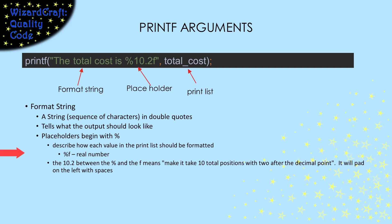Placeholders always start with a percent sign and end with a type specifier. In this case, I'm using the f type, so the value will be output as a real number. The 10.2 specifies that the output should use a total of 10 spaces, with two of those being after the decimal point. If necessary, those 10 positions will be left filled with spaces — in other words, the number will be right justified in those 10 positions.